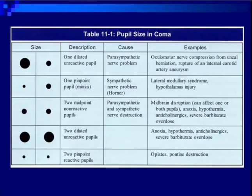Regarding pupillary findings: one dilated unreactive pupil suggests uncal herniation. A pinpoint or miotic pupil could be Horner's syndrome. Bilateral midpoint nonreactive pupils suggest midbrain disruption from anoxia, hypothermia, anticholinergics, or barbiturate overdose. Two dilated fixed pupils point to anoxia, hypothermia, or severe barbiturate overdose. Two pinpoint reactive pupils suggest opiates or damage in the pons.